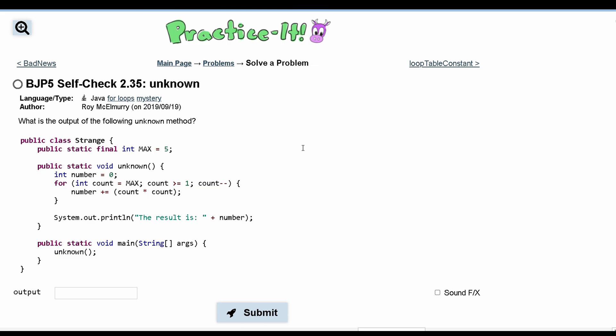For Practice-It Self-Check 2.35 unknown, we were asked what is the output of the following unknown method?